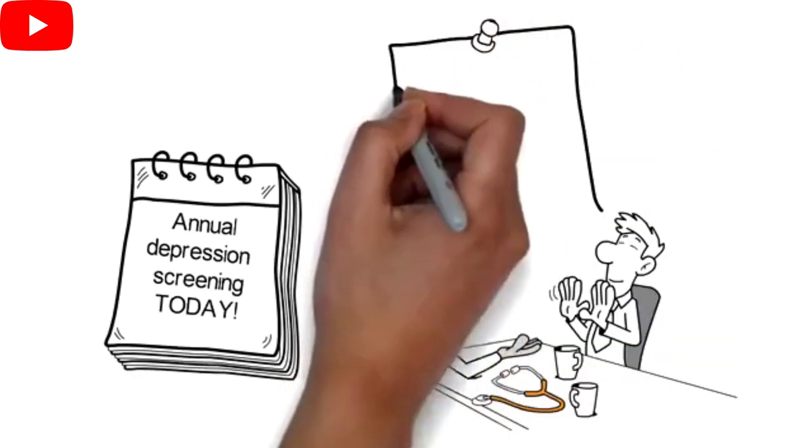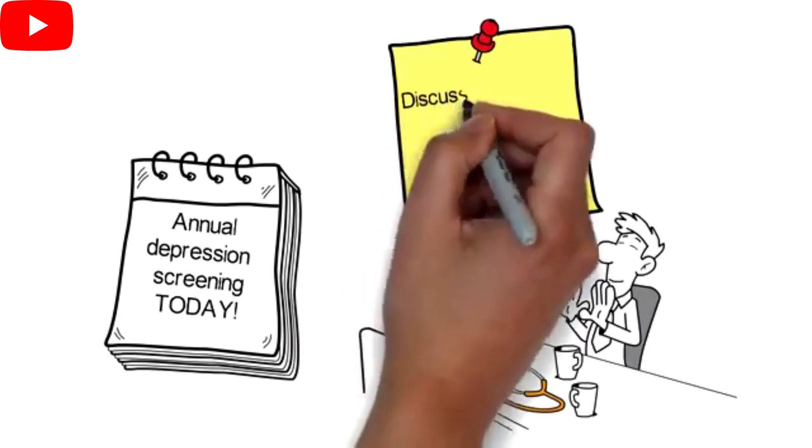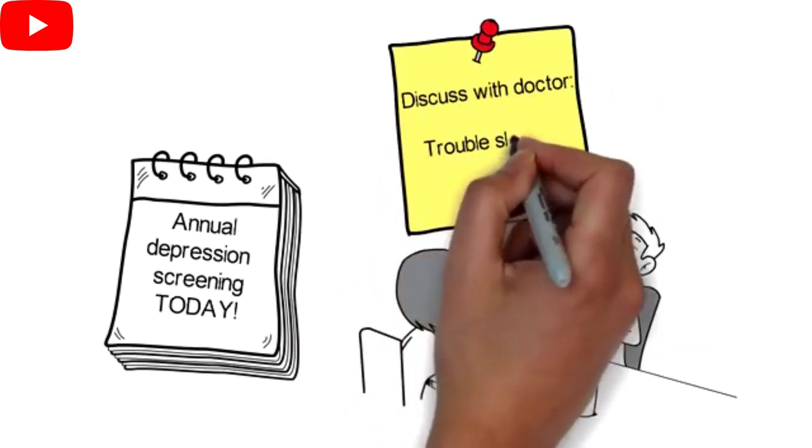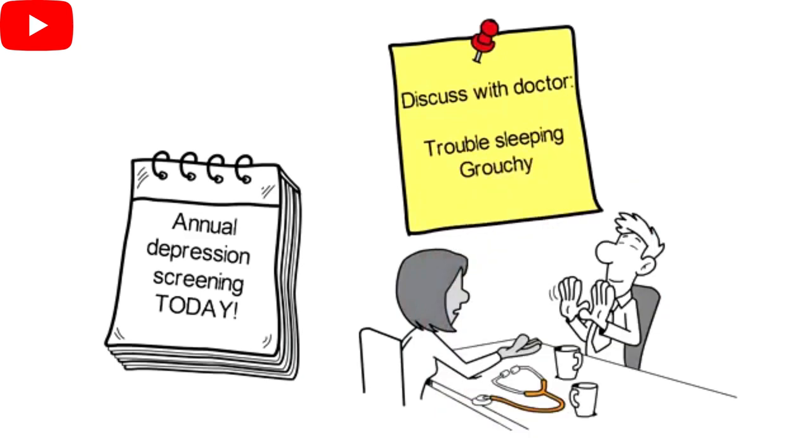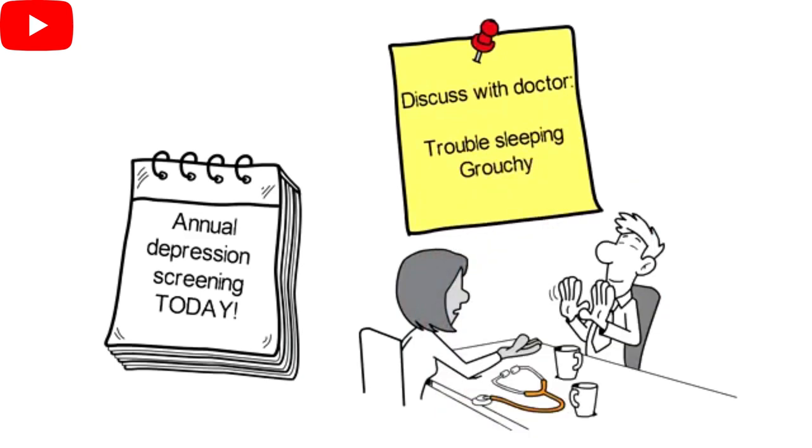However, sometimes a spouse or partner will mention their loved one is having trouble sleeping and is grouchy all the time. With these symptoms, there's often a problem with depression going on too.